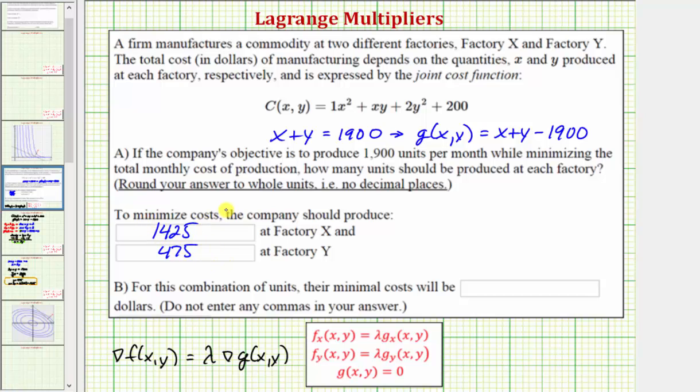Now you might be asking, how do we know this is a minimum cost, not a maximum cost? Well if we take a look at our function C(x,y), notice as x and y increase, the cost is also going to increase. But if we wanted to check this, we could select another x and y value that satisfies the constraint and see what the cost would be.